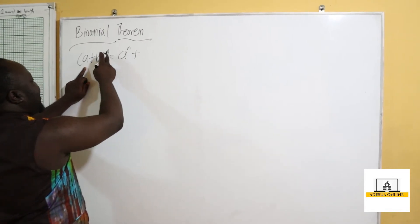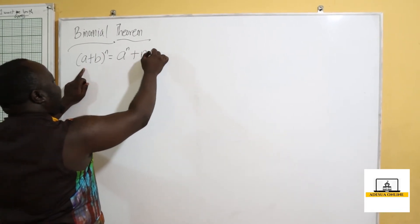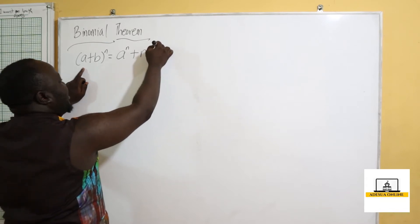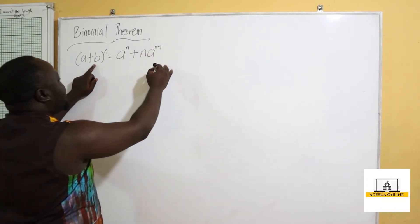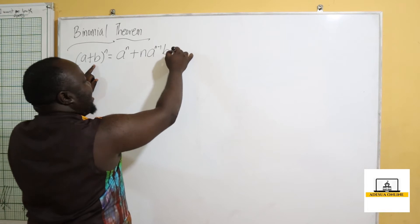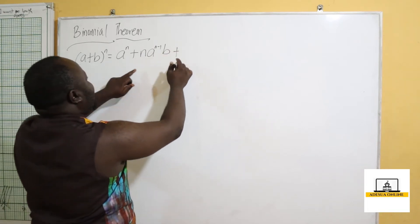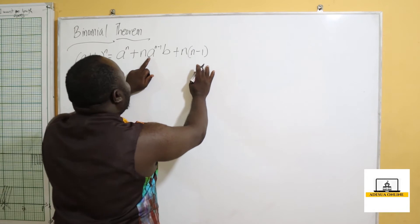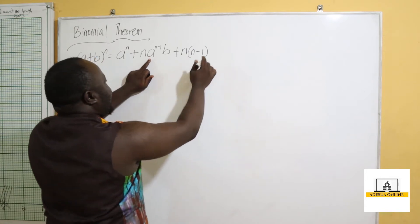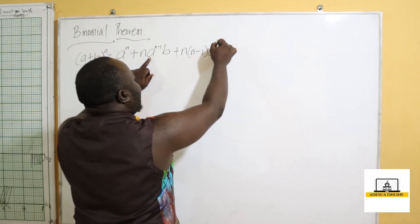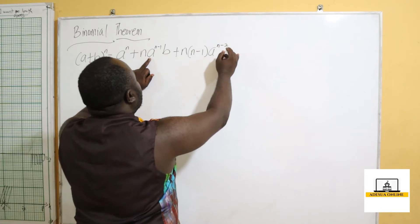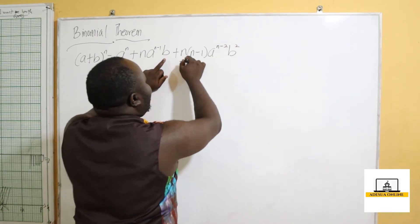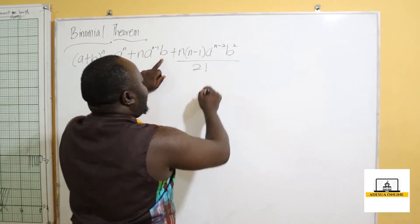Plus, we multiply n times a, giving us n·a, then we reduce the power of a by 1 to get n minus 1, then we introduce b. Then we have n times n minus 1, times a raised to the power n minus 2, times b squared, over 2 factorial.